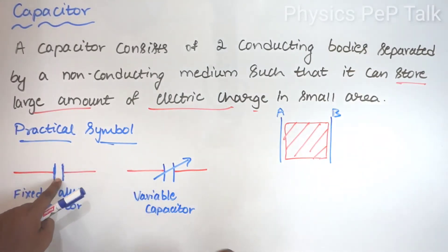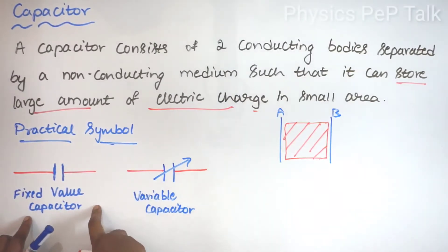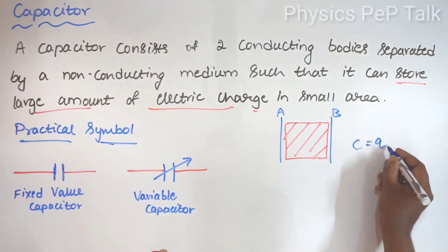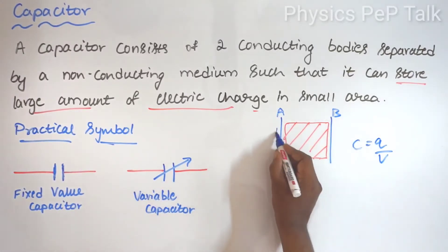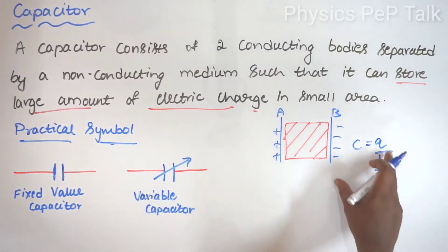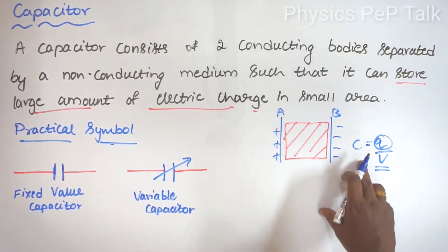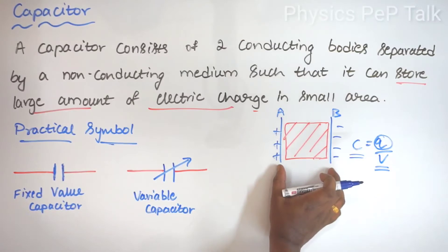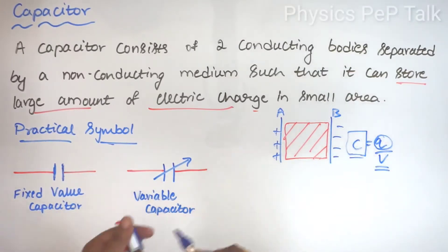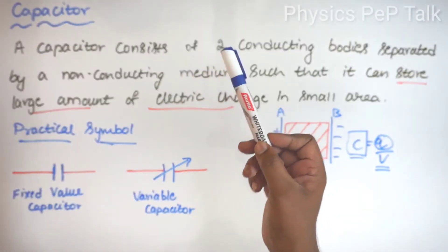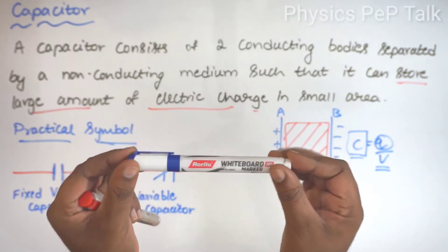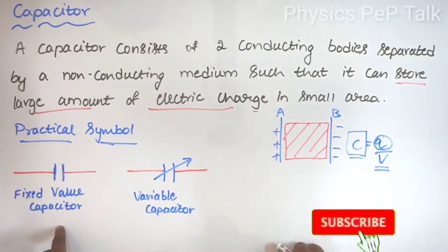One of the two parallel plates is there — this is a fixed value capacitor. The capacitance is given by C equals Q by V. If you have conducting materials with positive or negative charge and a potential difference, you get the capacitance of this device. If the capacitance value for a device is fixed — say 100 microfarad — throughout the experiment, that is its fixed value. The symbol for a fixed value capacitor is used as such.